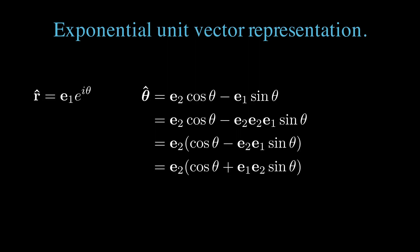Minus e2 e1 is i, so we have e2 times cos theta plus i sine theta, which is just e2 times e to the i theta.